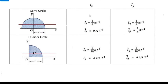About the Y-axis, Iy = (1/8)πr⁴, again half the moment of inertia of the whole circle. For the centroidal Y-axis of a semicircle, the Y-axis and the centroidal Y-axis are the same, so Ī_y = πr⁴/8 directly — half the moment of inertia of the whole circle.